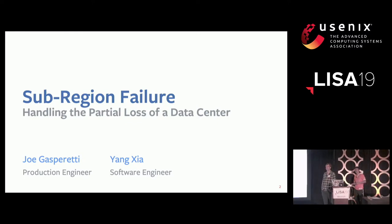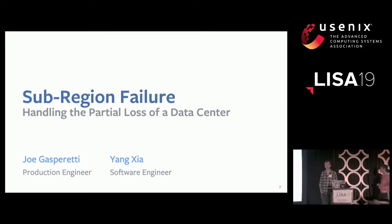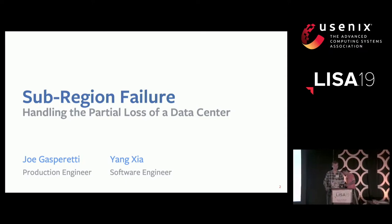We're calling it sub-region failure. To explain what that jargon means, we'll go through what a user request looks like as it passes through the Facebook system and the DR requirements that we've had for our systems over time.